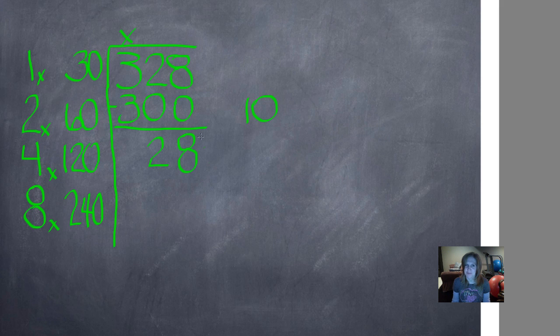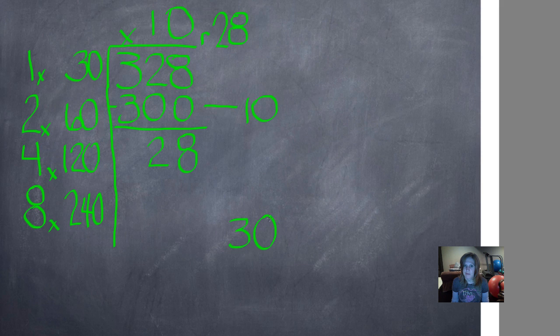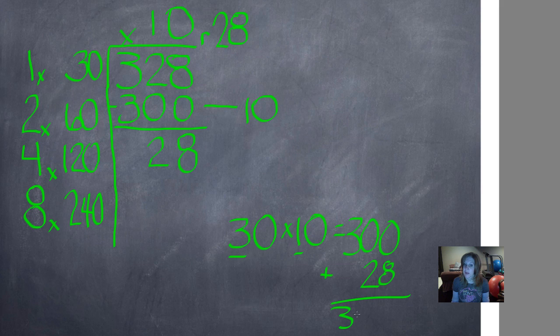Now we're looking at our answer of 28 right here, what we were left with. And there is no number that will go into that without going over it. So this is actually our remainder. Remainder, 28. And we don't have anything to add over here. So 10 is actually our quotient. If you're not sure about that, let's do some mental math. 30 times 10 equals, 3 times 1 is 3, and add our two zeros, 300 plus 28 is 328, which matches our dividend.